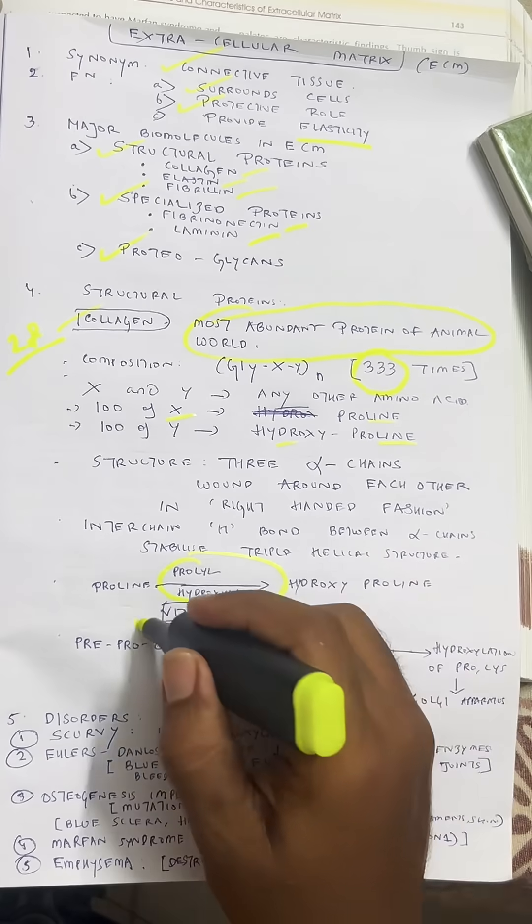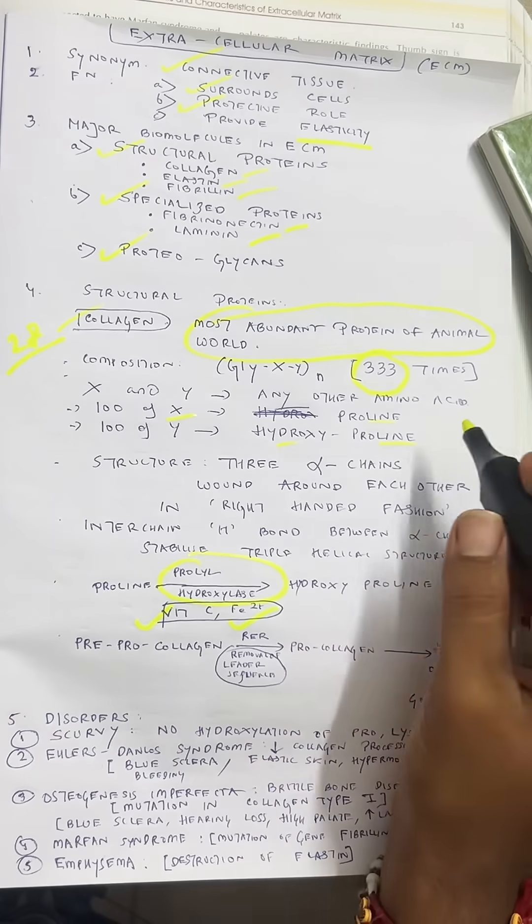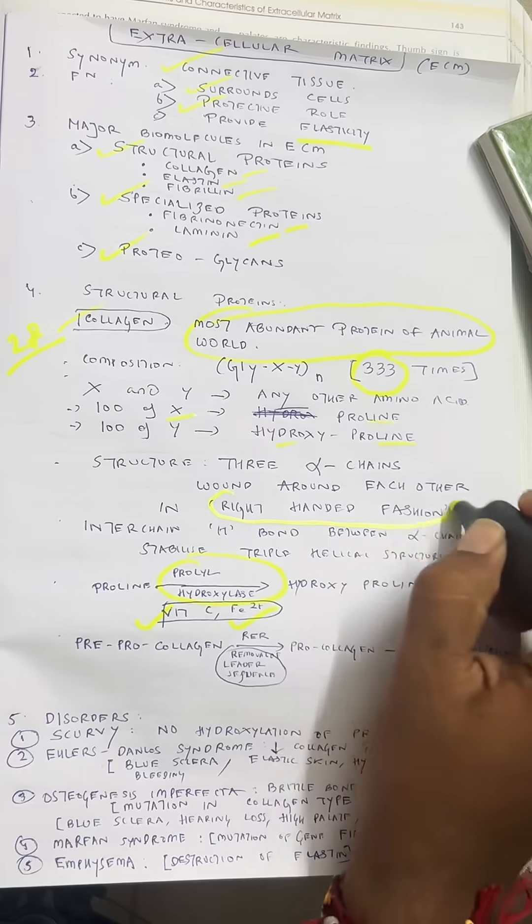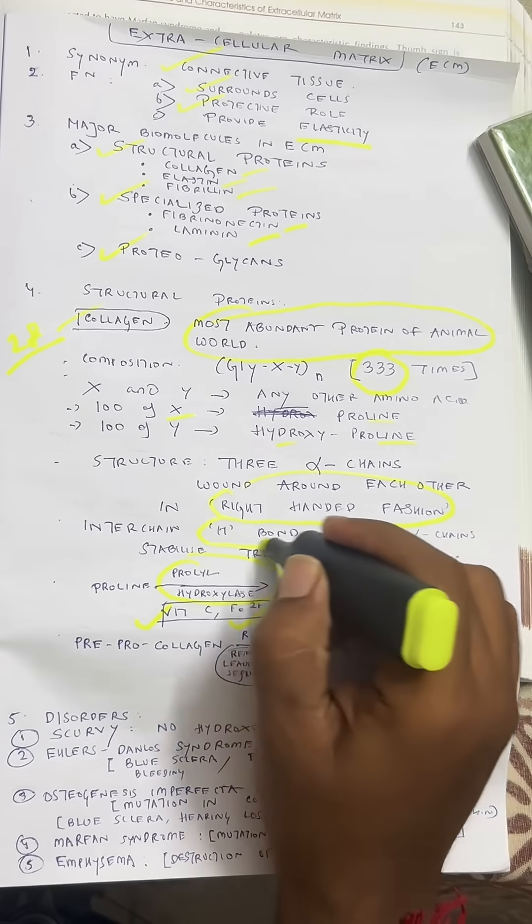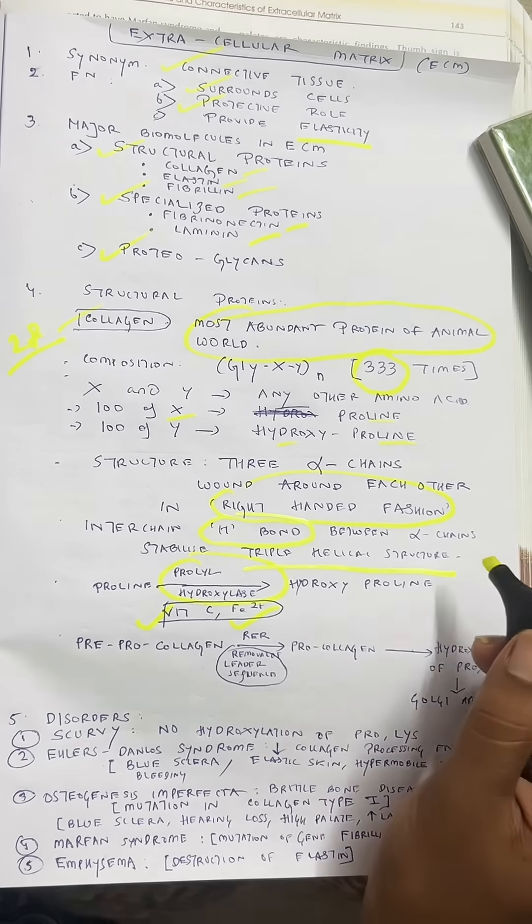Structure: Three alpha chains wound around each other in a right-handed fashion. These alpha chains are bound by inter-chain hydrogen bonds, which stabilize the triple helical structure of collagen.